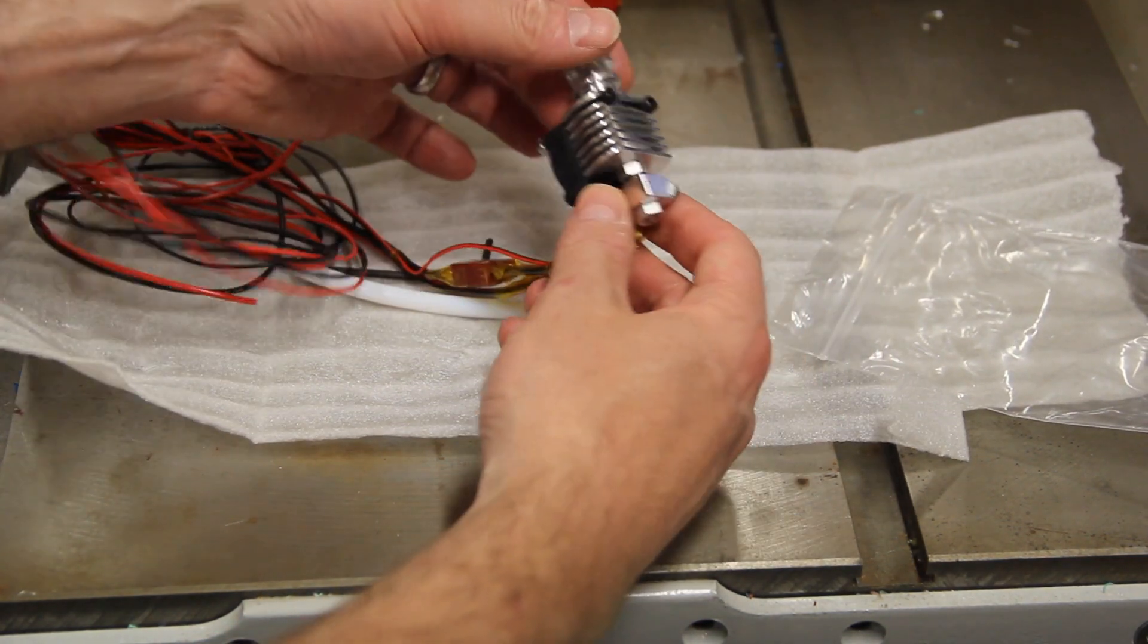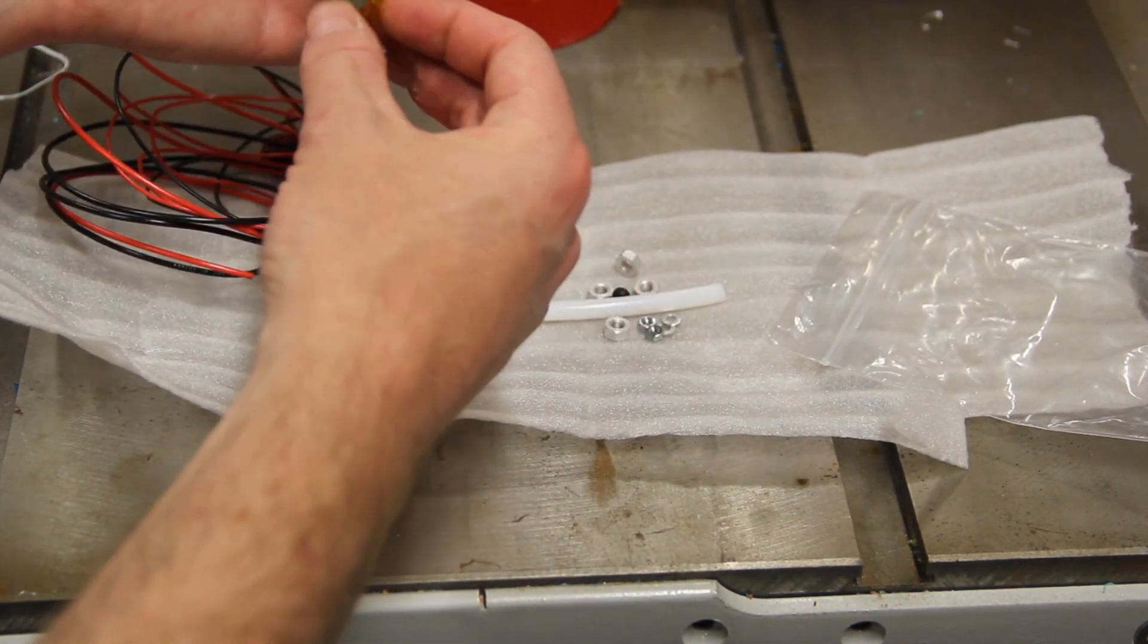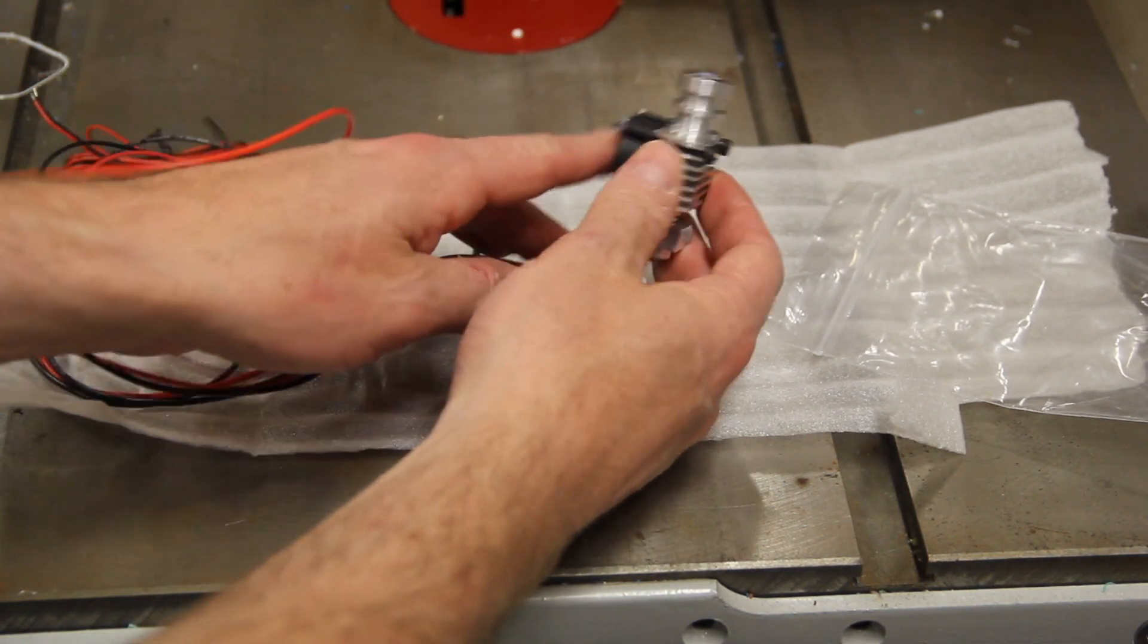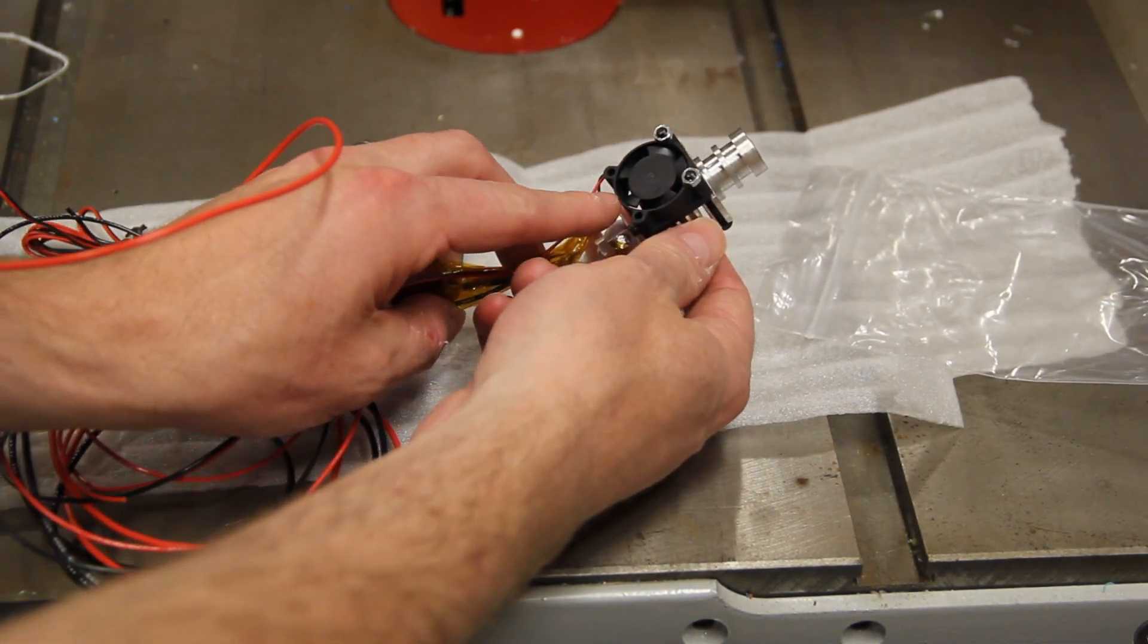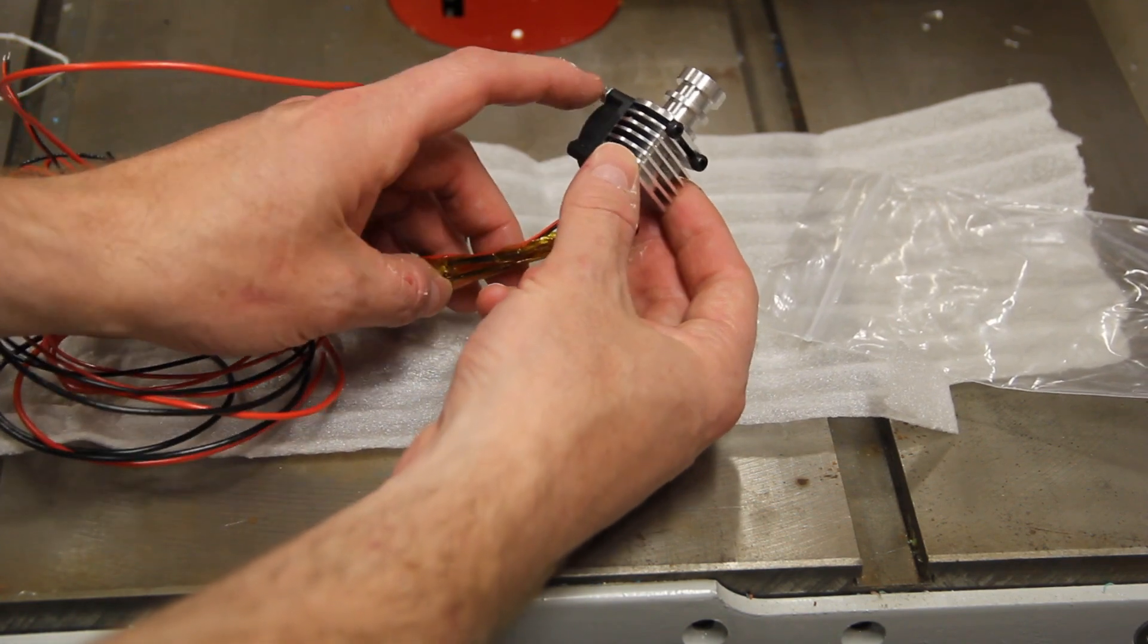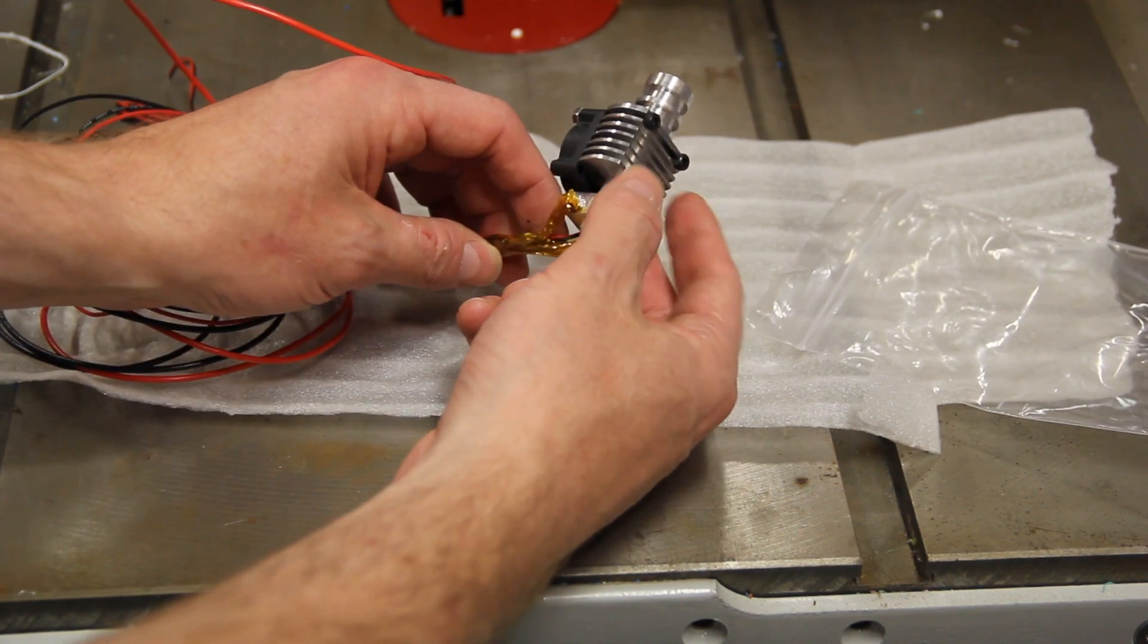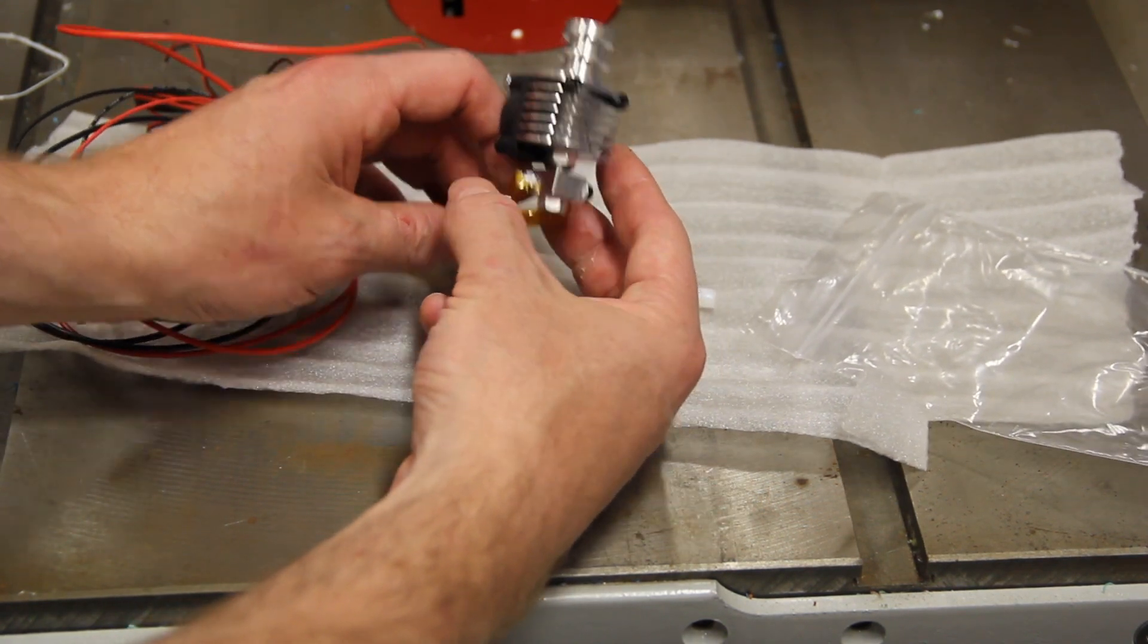This is a very nicely machined piece of aluminum right here. It's got the fan, which looks like a 20 millimeter fan, and that is bolted directly onto the heat sink. So you're not going to get the kind of noise that you would in some of the other hotends that you might have seen me review.